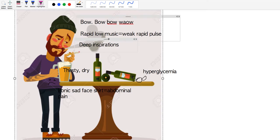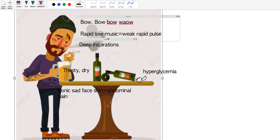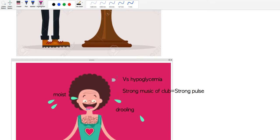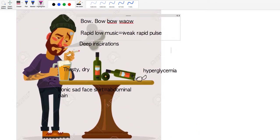Deep inspirations are represented by his taking a drag on his cigarette. Rapid and low music - so at the bar you're going to hear fast beat music, whereas at the club you're going to hear loud music. At the bar we get quiet music being representative of weak, but it's still fast music, so it's rapid - a weak and rapid pulse.